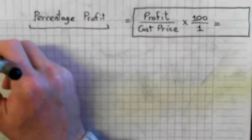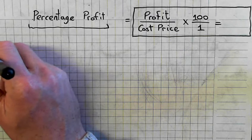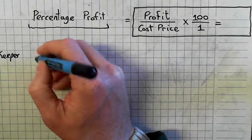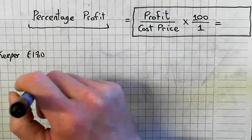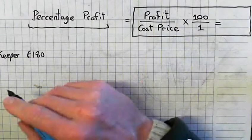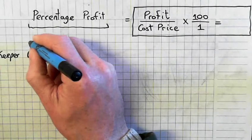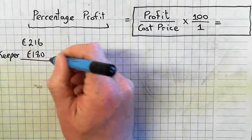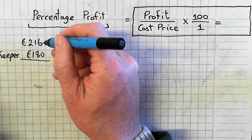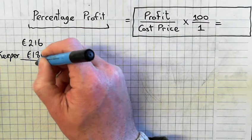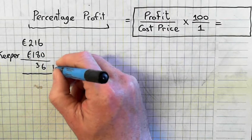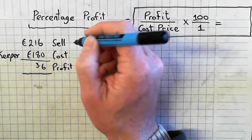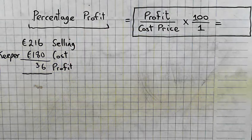Buys cameras at €180, so that is the cost price. And sells them at €216, so that's the selling price. How do I find the profit? Cost price subtracted from the selling price. €36 is the profit. So this was the cost price, and this was the selling price, and that's the profit.